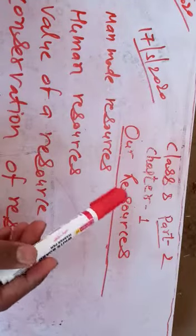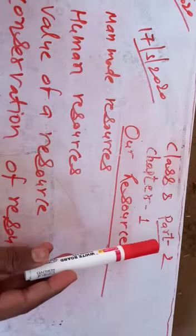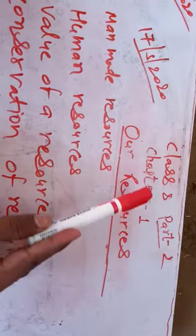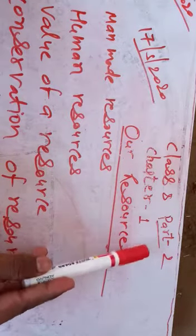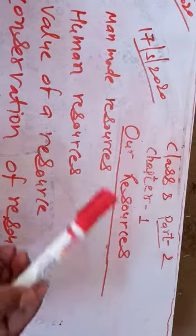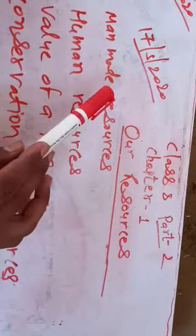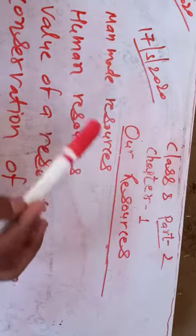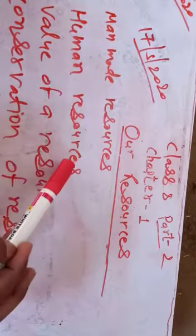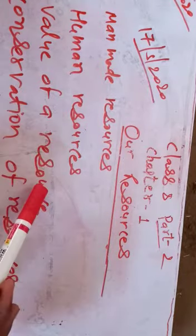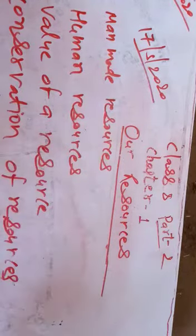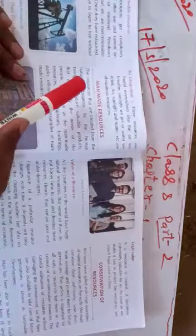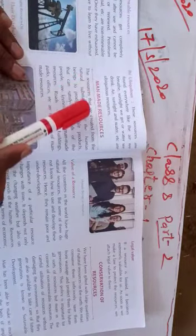Hello students, this is Part 2 of Chapter 1 in Geography - 'Our Resources'. Now we will try to know about man-made resources, human resources, value of a resource, and conservation of resources. Let's get started.